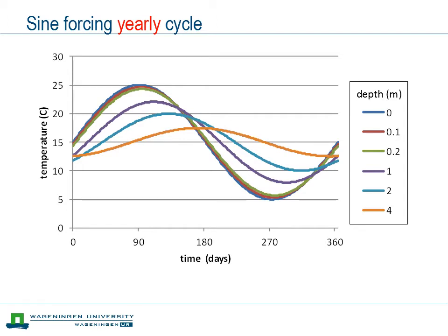For the yearly cycle, which can also be assumed to be roughly sinusoidal, if we focus on the surface, 10 centimeters, and 20 centimeters, we can hardly distinguish these lines. At the scale of a year, it doesn't really matter whether you are at the surface or 20 centimeter depth. But if we include larger depths — 1 meter, 2 meters, and 4 meters — we again see the same pattern: a reduction in amplitude and a shift in phase.